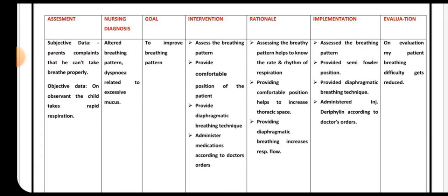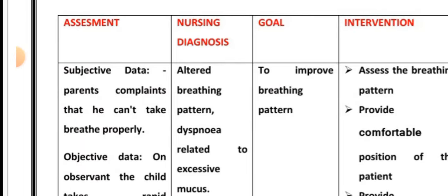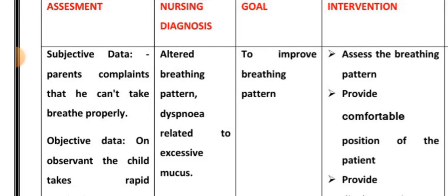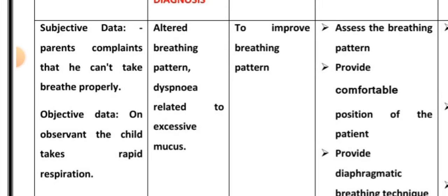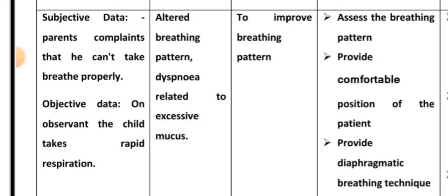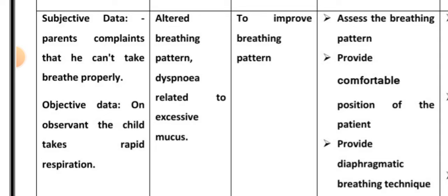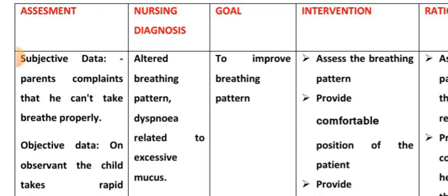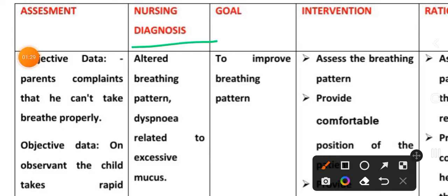This is our first nursing care plan — the assessment. Subjective data: the patient's parents complain that the child cannot breathe properly. Objective data: on observation, the child shows rapid and shallow respiration. The nursing diagnosis is altered breathing pattern related to excessive mucus.